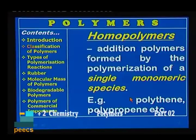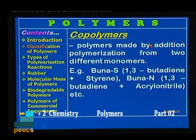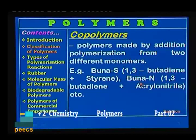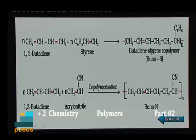Homopolymers are addition polymers formed by the polymerization of a single monomeric species. Examples are polythene, polypropylene, etc. Copolymers are made by addition polymerization from two different monomers. Example is Buna-S, formed by the reaction between 1,3-butadiene and styrene. Another example is Buna-N, formed by the reaction between 1,3-butadiene and acrylonitrile. So 1,3-butadiene reacts with styrene to form butadiene-styrene copolymer, which is called Buna-S, also known as SBR (styrene-butadiene rubber).